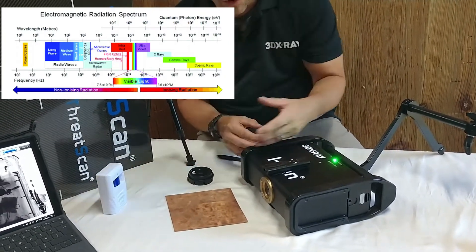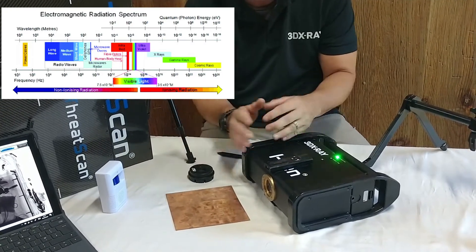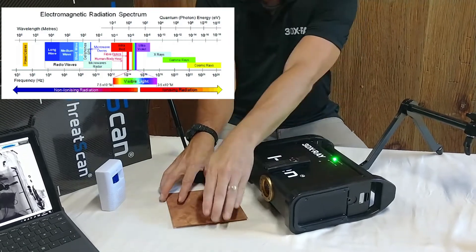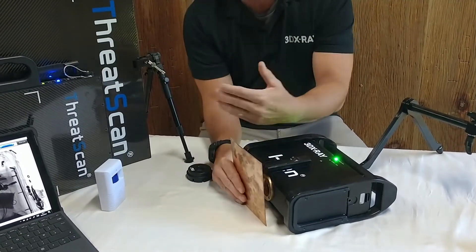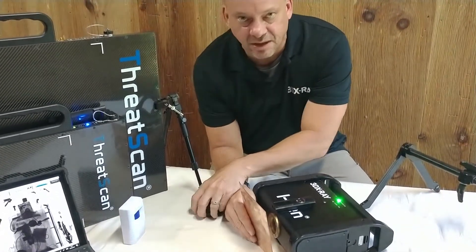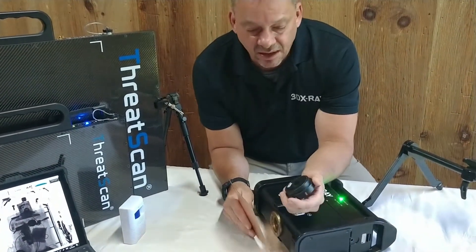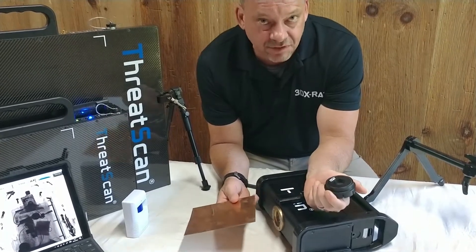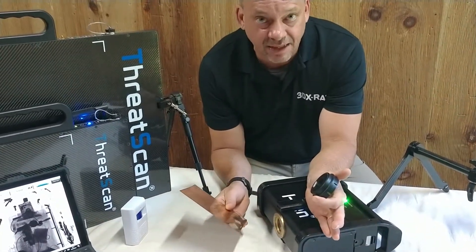An x-ray generator, whether it's a pulse or constant potential system, shoots out photons in a cone. What they'll try to do with a pulse system is take something like a copper filter and put it in front of it, trying to reduce the number of photons hitting something like a PIR. Another material they'll use is tentilum — and as you go up in the density of that material, the more photons it will absorb.